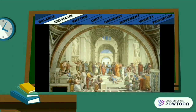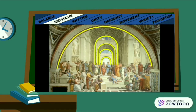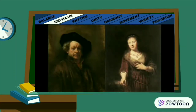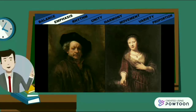In School of Athens by Raphael, the artist draws the viewer's attention to the central figures placed symmetrically within the architectural features of the painting. The artist also used perspective to achieve emphasis by placing the vanishing point behind these central figures. In two portraits by Rembrandt, the artist draws attention to the faces and hands by making these areas dramatically lighter, while everything else falls into shadow — achieving emphasis through contrast.